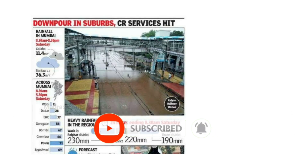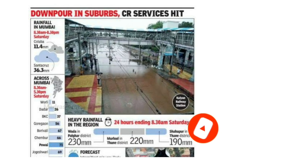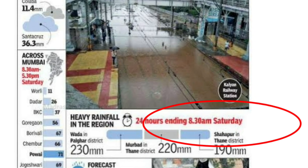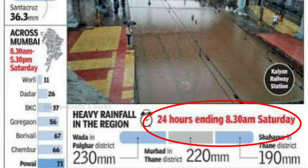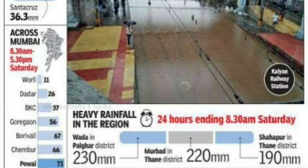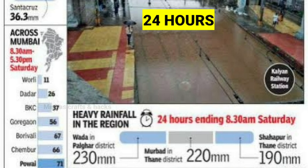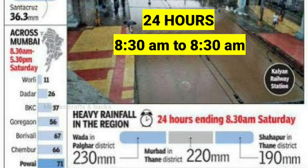Many of us might have heard the following in a weather report: around 20 centimetres of rainfall recorded in the last 24 hours in the suburban areas. How is the 24-hour period calculated? In many countries, the 24-hour period is calculated from 8:30 AM of the previous day to 8:30 AM of the next day.